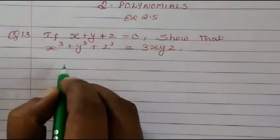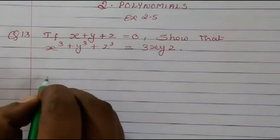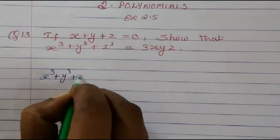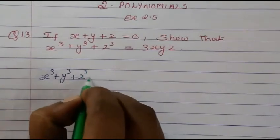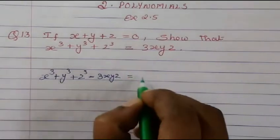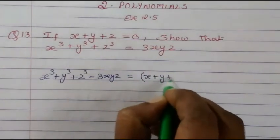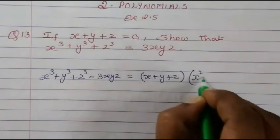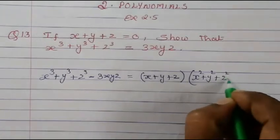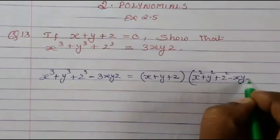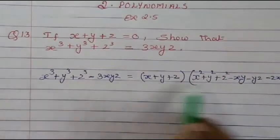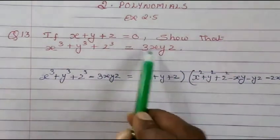I'm writing down the identity again: x cube plus y cube plus z cube minus 3xyz is equal to x plus y plus z, multiplied by x square plus y square plus z square minus xy minus yz minus zx. This is the identity.